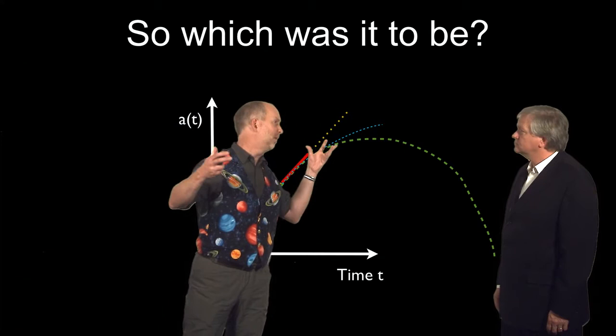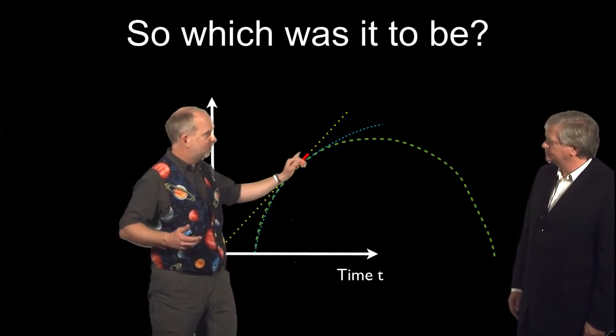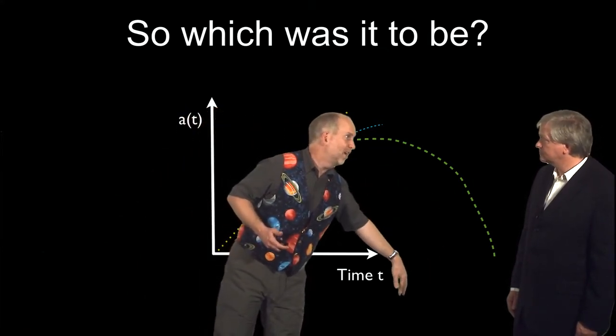We'll keep on expanding but slow down but never stop? Or is it going to be a much more violent universe where it expands, expands, we're still here, then turns around and comes back down together again?